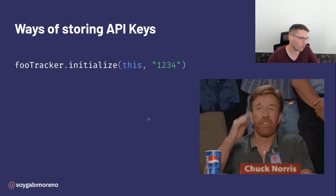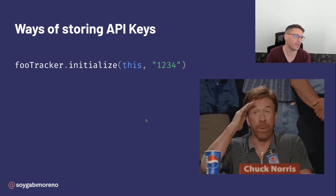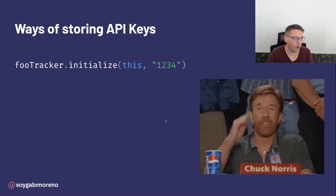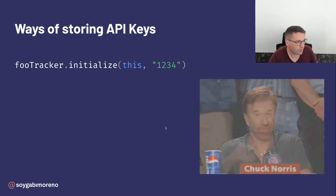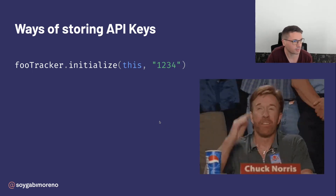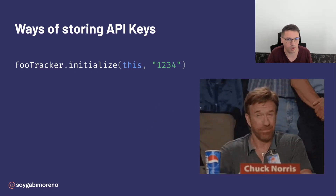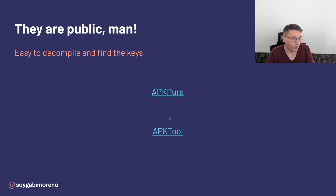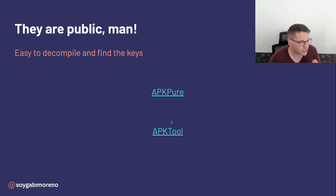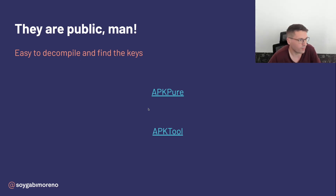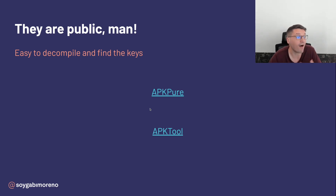And finally you can do the Chuck Norris way — that would be to hard-code them directly in your code. Well, this is more of a joke, but I am pretty sure there are many people that continue doing this. What I mean is they are public, and the bundles are public. By the way, the API key is inside them too, and it is easy to decompile and find the API keys.